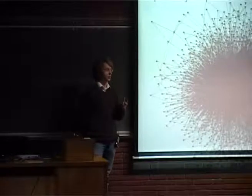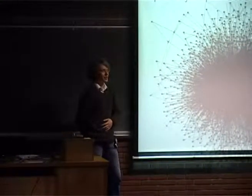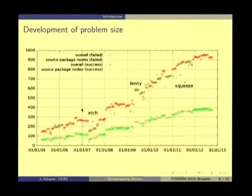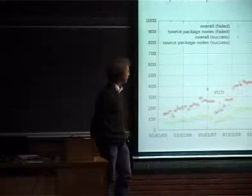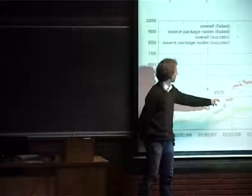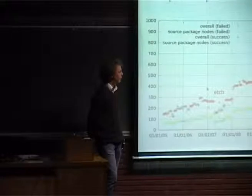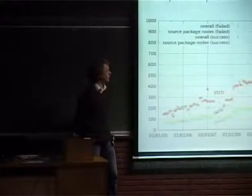If someone today wants to bootstrap Debian SID for a new architecture, they have to solve that. As we see from the past, a human can solve it with lots of effort and months — up to a year-long struggle. We also see that the size of this graph increases over time, starting in 2005 using data from snapshots.debian.org through January 1st, 2013. The problem size generally stayed constant before a new release, but it seems to be increasing over time, and we don't know how it will develop in the future.